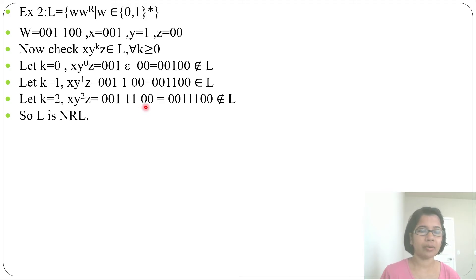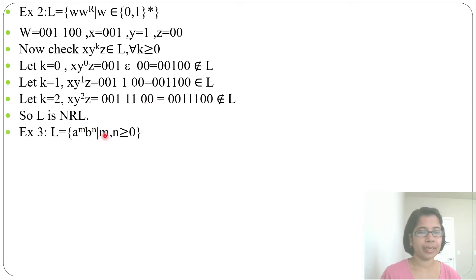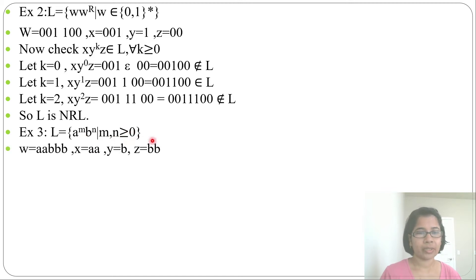Now let's check a regular language and try to verify it through the pumping lemma. Let L = {a^m b^n | m, n ≥ 0}. This is a regular language — any number of a's followed by any number of b's. Let w = aabbb (2 a's and 3 b's).